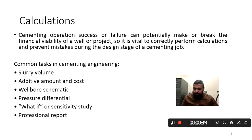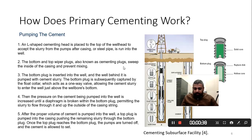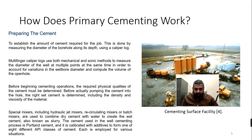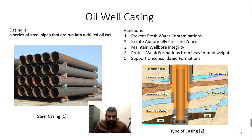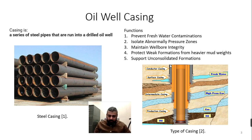Let's look at a simple diagram here. For example, you want to do cementing from this zone to this zone — from here to here. The first question is: how much is the volume of cement required from here to here? Secondly, what class of cement are you going to use?